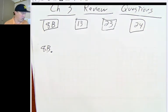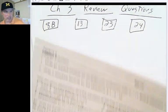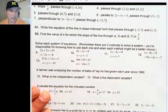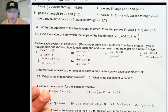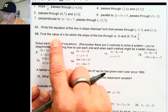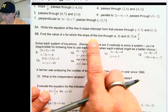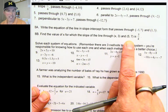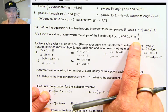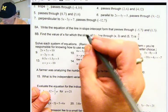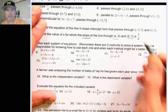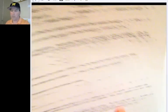Let's first take a look at question 8b. It says find the value of x for which the slope of the line through x,3 and 5,7 is 5 over 4. So, keyword here, slope. They're asking for slope and they give you two points. You're going to want to put those two points into the slope formula.